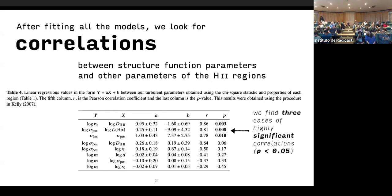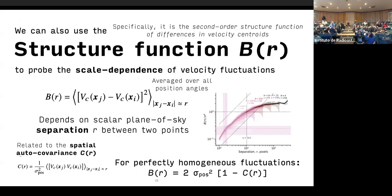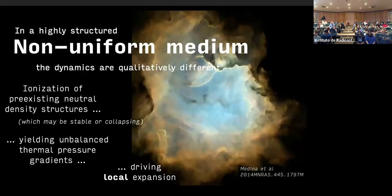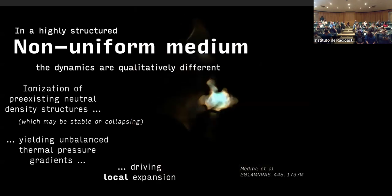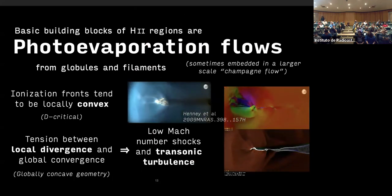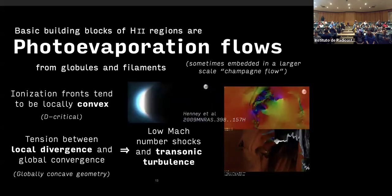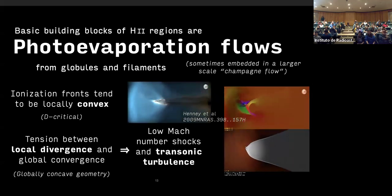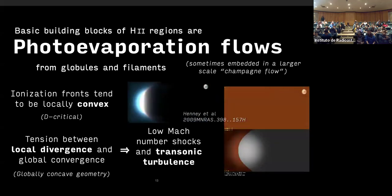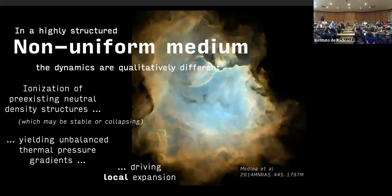For the case of Orion, which we've studied in detail in a previous paper, the explanation we came up with was that the driving of the turbulence was all the photoevaporation flows. It wasn't anything large scale. All these flows go in all directions and they shock against each other. This forms the driving at small scales.